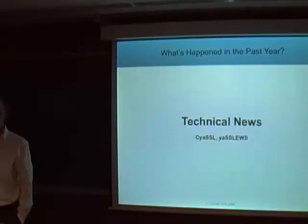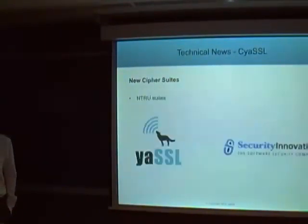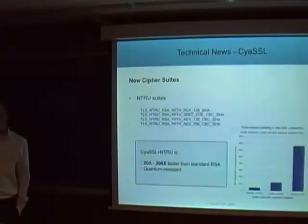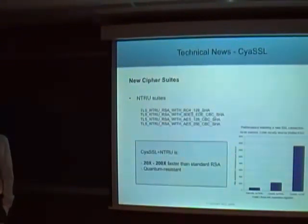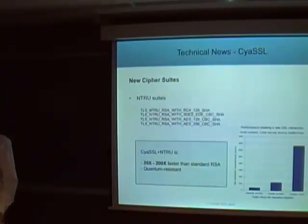Looking at some of the technical changes, we've added a couple of new cipher suites. We've added ECC support to our library, as well as SHA-256. We've partnered with a company called Security Innovation to bring NTRU cipher suites to CYASL. NTRU is similar to RSA — a public key method that can provide speed increases anywhere from 20 to 200 times faster than RSA, depending on your key size. The improvement grows as your key size increases.